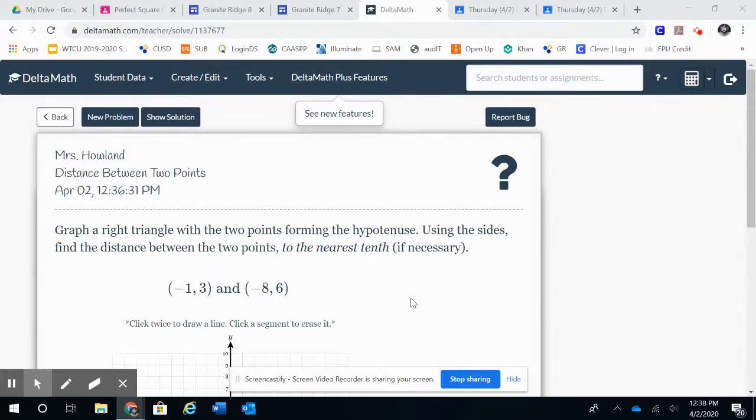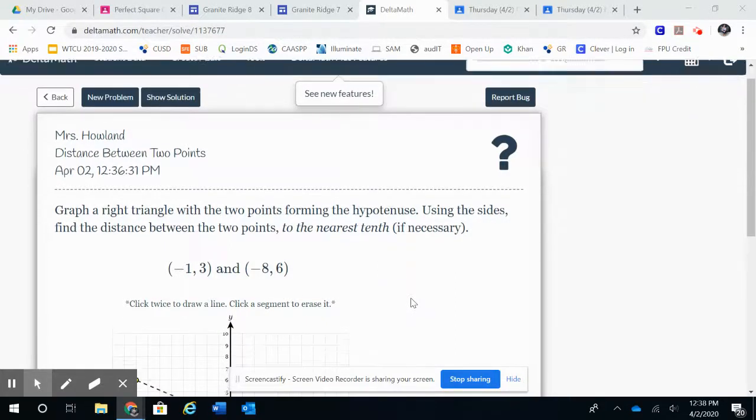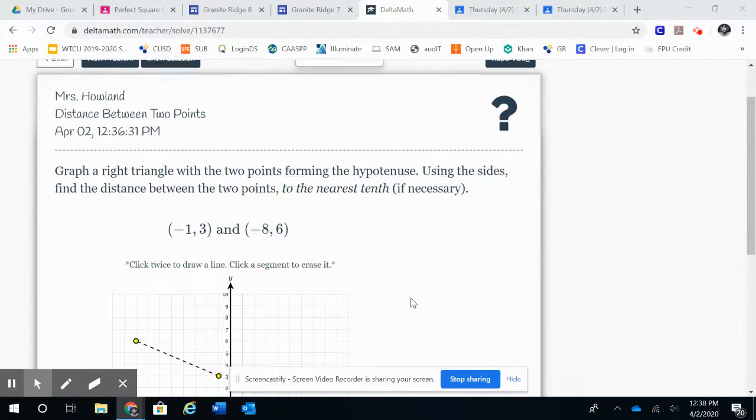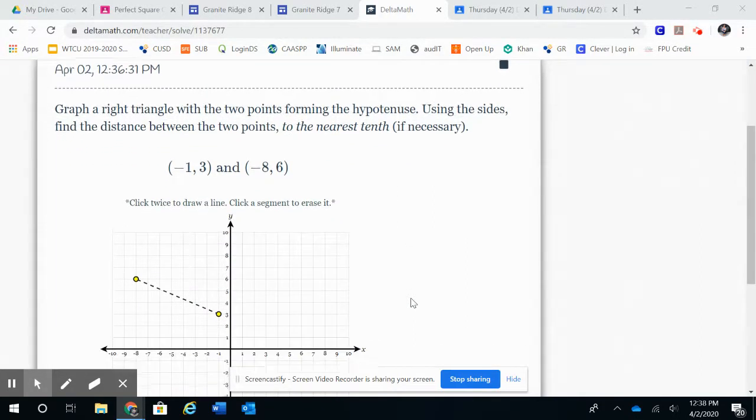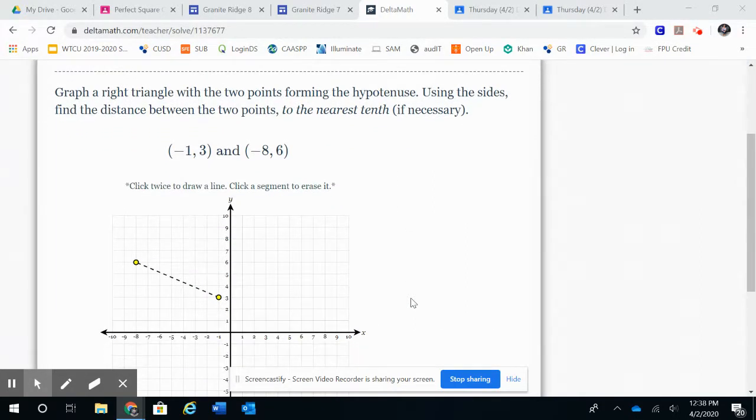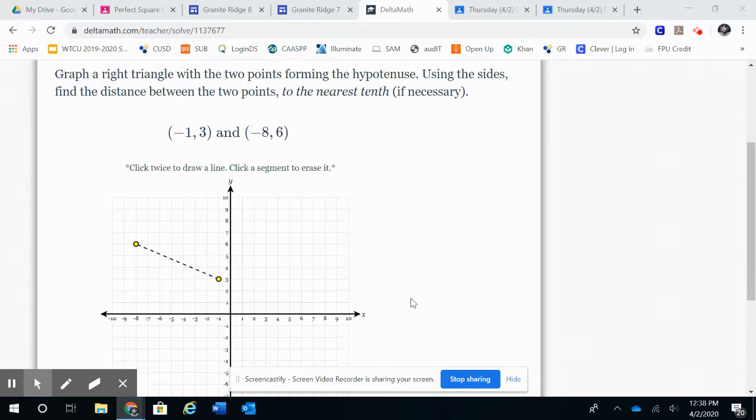On DeltaMath, the distance between two points assignment, I'm going to go ahead and do an example for you. It says graph a right triangle with two points forming the hypotenuse. Using the sides, find the distance between the two points to the nearest tenth if necessary.